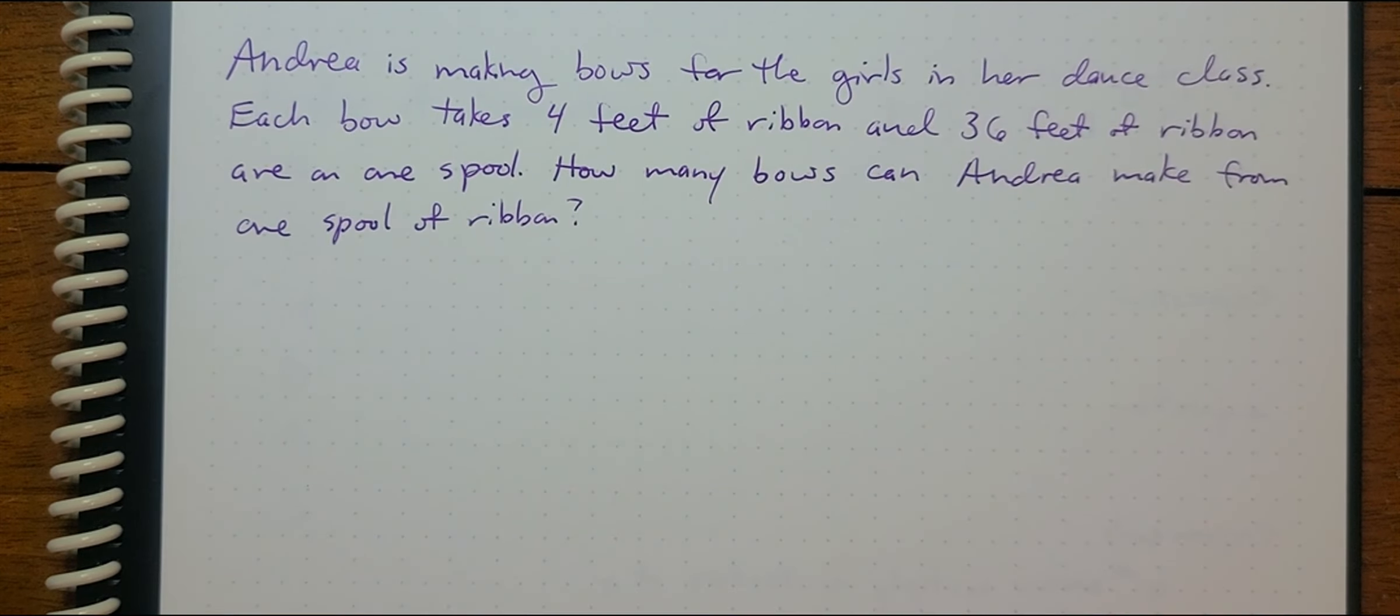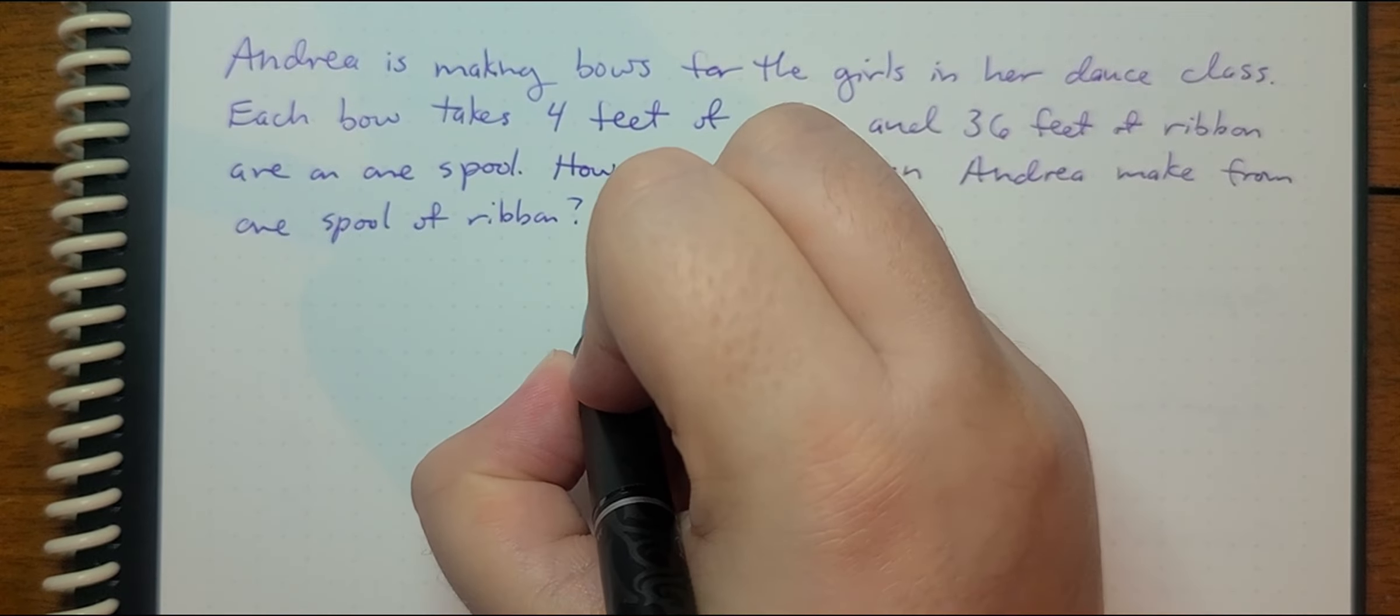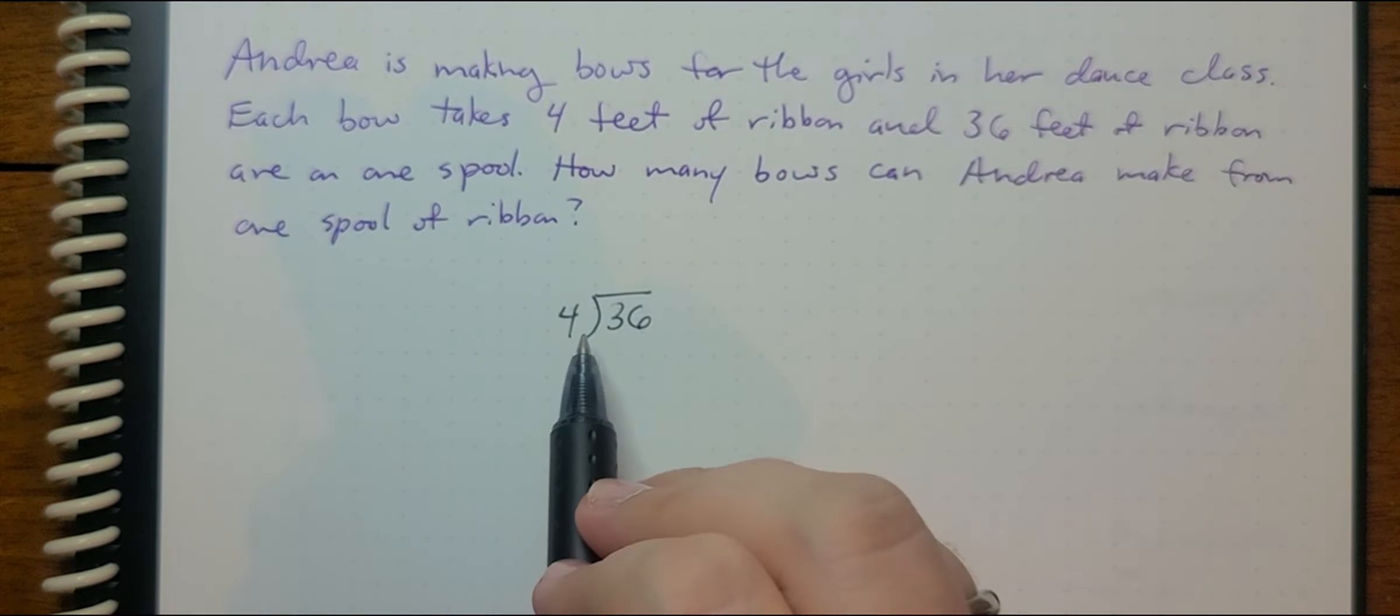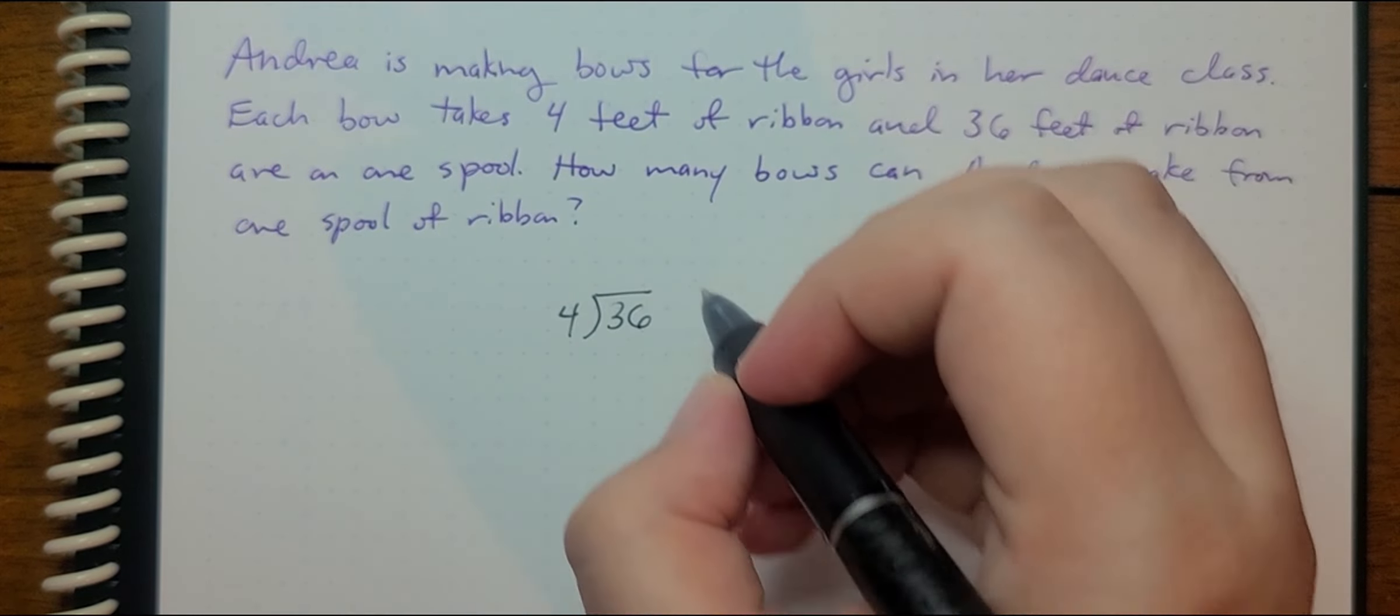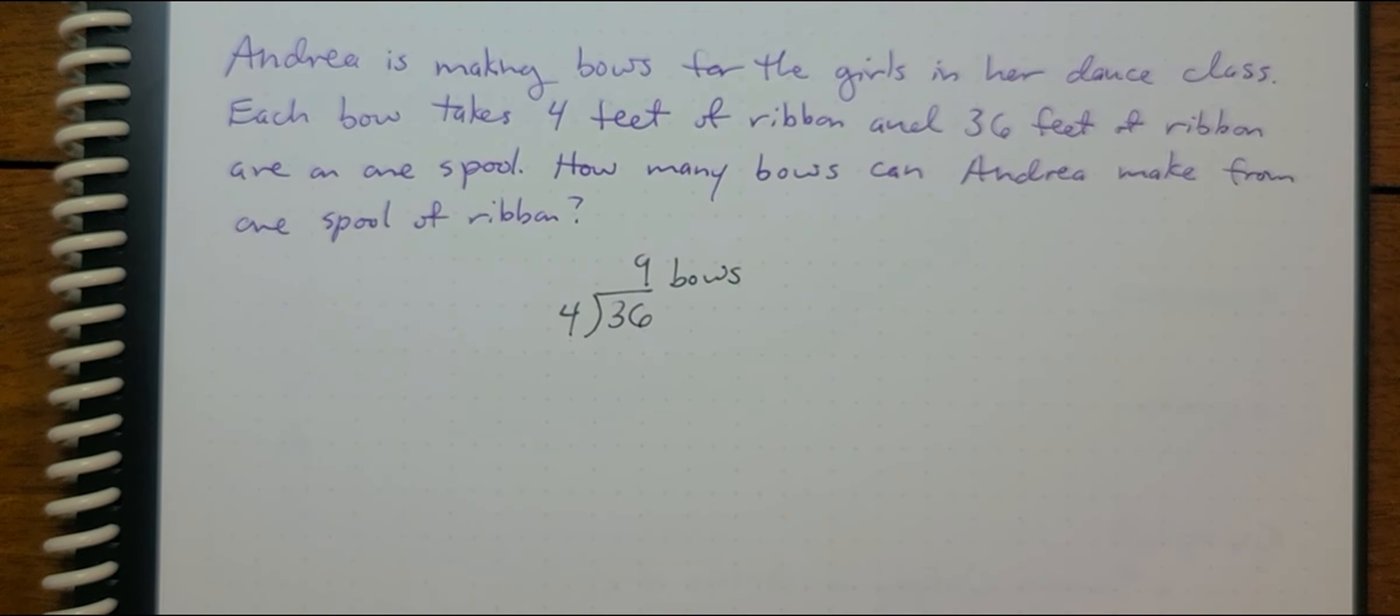Andrea is making bows for the girls in her dance class. Each bow takes four feet of ribbon and 36 feet of ribbon are on one spool. How many bows can Andrea make from one spool of ribbon? So she's got one spool of 36 feet. She needs four feet per bow. We know that four goes into 36 nine times. So she can make nine bows from one spool of ribbon.